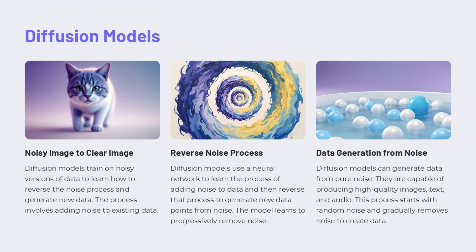Diffusion models are a powerful class of generative models that can produce high-quality data like images, text, and audio. The key idea is to train the model on noisy versions of data and then learn how to reverse the noise process to generate new data. This involves progressively adding noise to existing data and then training a neural network to remove that noise and reconstruct the original data. By starting with pure random noise and gradually removing the noise, diffusion models can generate completely new data samples from scratch, learning the underlying structure and patterns in the data.